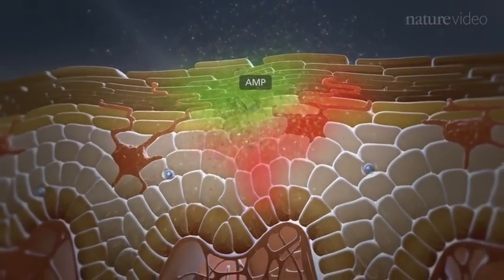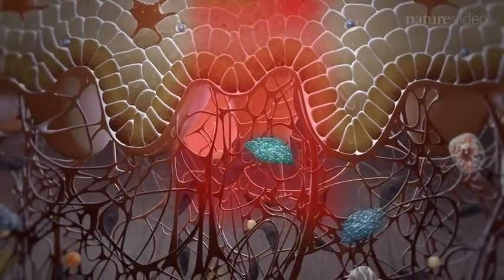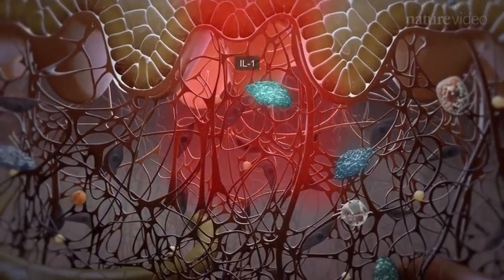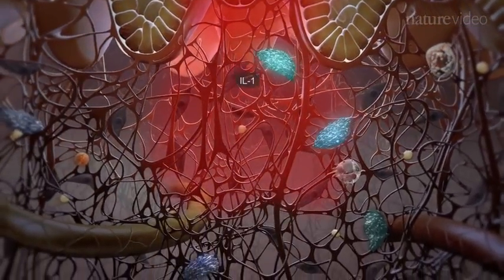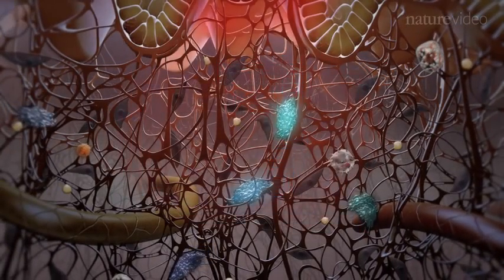Keratinocytes produce antimicrobial peptides which can kill bacteria directly, inflammatory mediators such as interleukin-1 or IL-1 which activate dendritic cells, and chemokines which recruit neutrophils, macrophages, and T-cells.